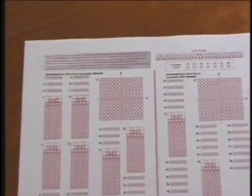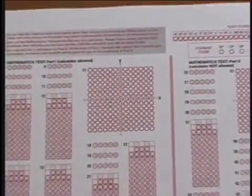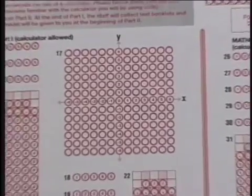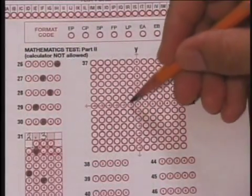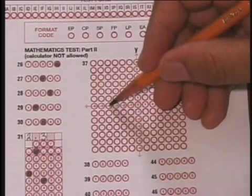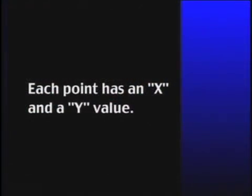When the answer to a question is a point on the coordinate plane, that answer is recorded on the coordinate grid. The grid represents some of the points on the central section of the coordinate plane. Each point has an x and a y value.